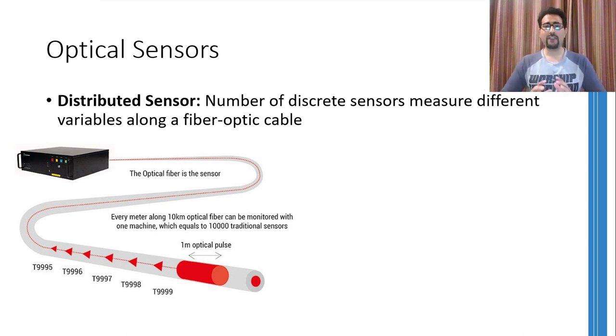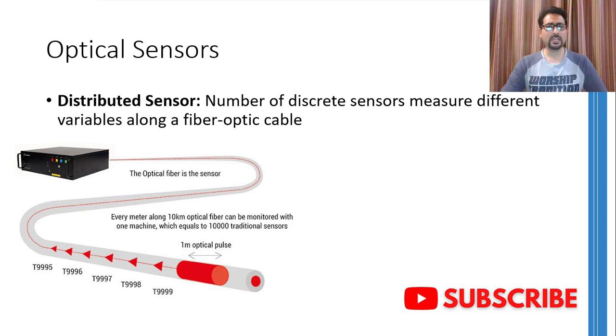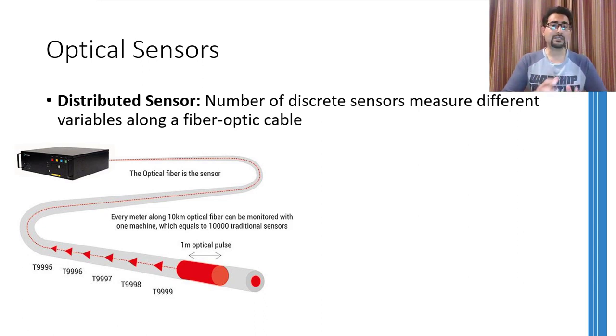Just to summarize, whenever light travels, because of the microscopic changes in the refractive index of the medium, there are reflections at every point. Similarly, if this light is traveling through a fiber optic cable, it is being reflected at each and every point inside the fiber optic cable. These reflections will travel in the opposite direction as compared to the main direction of the light. These reflections are received by a highly sensitive receiver present at the starting point of the fiber optic cable.